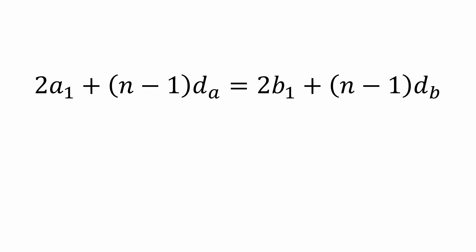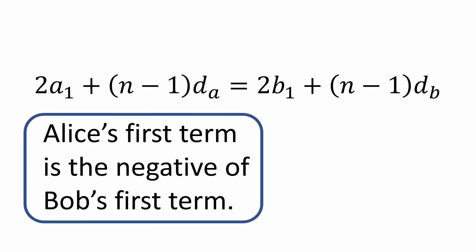Now we can use one of the clues given in the problem. Alice's first term is the negative of Bob's first term. So that means A1 equals negative B1 or equivalently B1 equals negative A1. When I substitute that into our expression above, I get this.